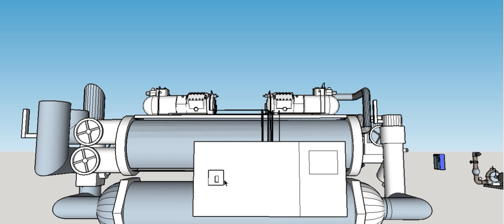Over here we have the power switch, which provides electrical power to the chiller and also to the heater for the oil on some of the compressors. The control panel display screen is used to monitor and adjust the pressure and set points for the unit.